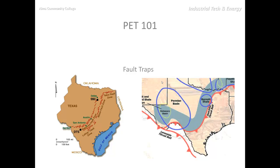Notice how often accumulations occur along fault lines. Here we have Texas and the Gulf of Mexico right here. There's this fault zone right through here. If you were to overlay that fault zone with this accumulation of fossil fuels, you would recognize that there's a very tight correlation between fault zones and accumulations. So these fault traps are very popular, particularly along or near fault lines.